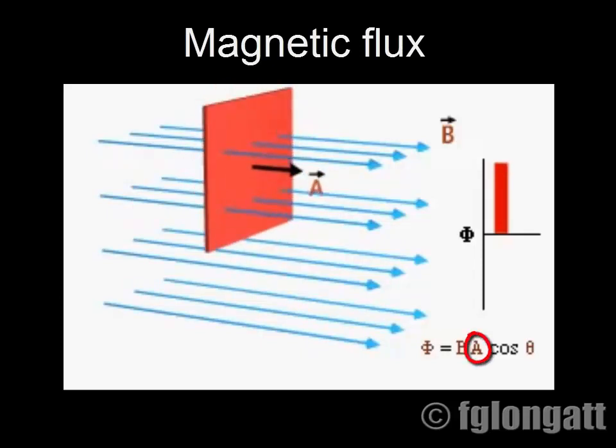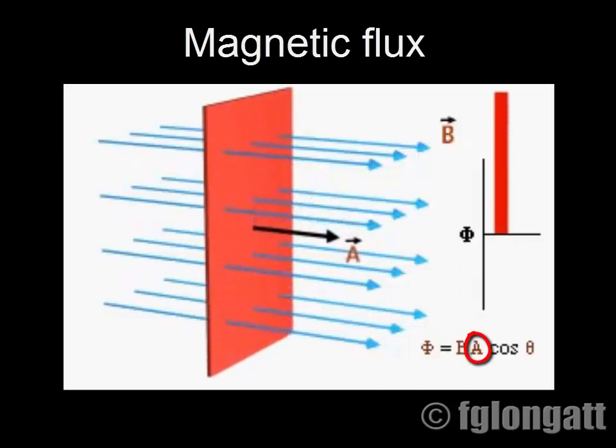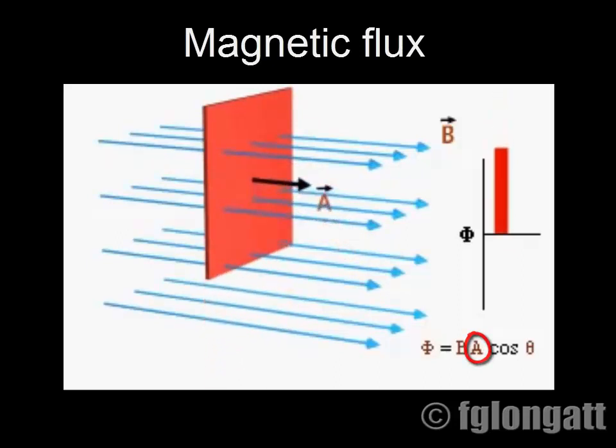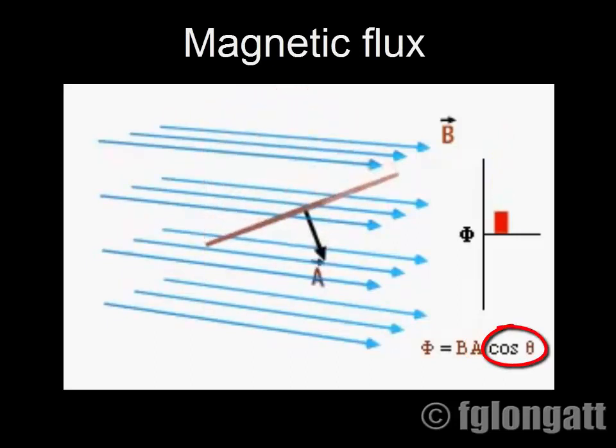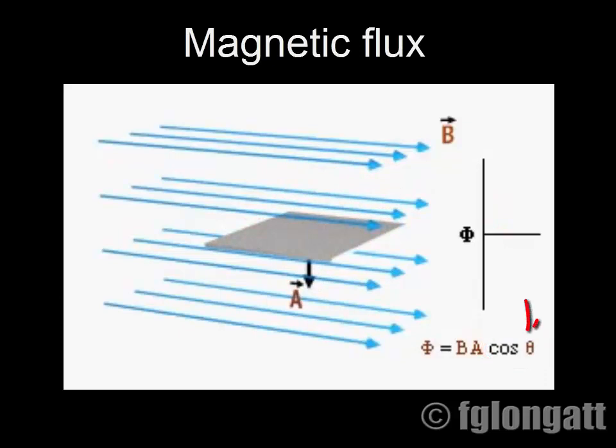However, the flux does change if the area changes. The flux also changes if the surface is tilted, falling to zero when the surface vector is perpendicular to the field lines. The cosine theta term in the equation accounts for this.